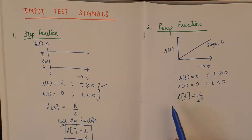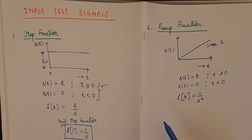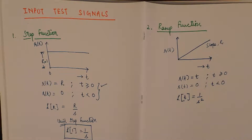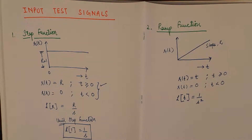The ramp function is also known as the velocity function, and similarly the step function is also known as the displacement function. Since velocity is the first time derivative of displacement, the first time derivative of the step function gives the ramp function — establishing the relationship between them.